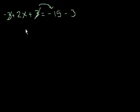So this will simplify to 2x, because the 3's cancel out, they become just 0, equals minus 15 minus 3. Well, that's minus 18.